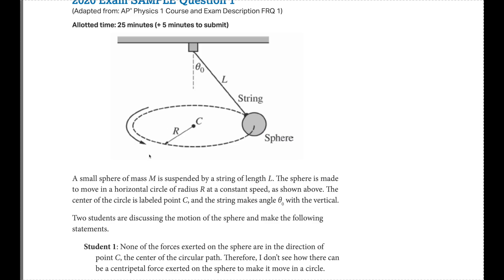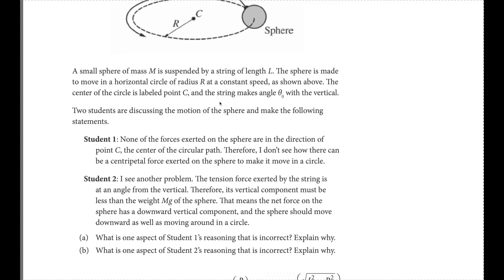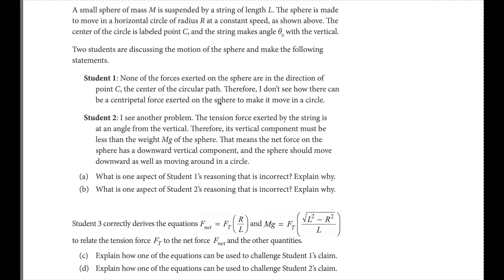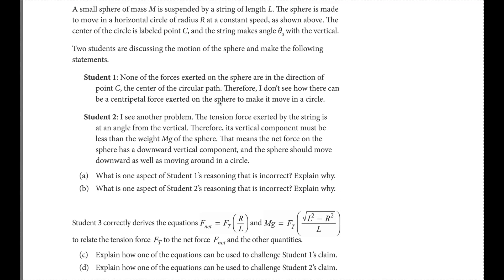Essentially what happens is we have a small sphere mass M suspended by a string with length L. The sphere is making a horizontal circle with radius R at a constant speed. The vertical circle is labeled, the middle of that circle is labeled with point C, and the string makes an angle theta.